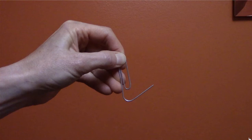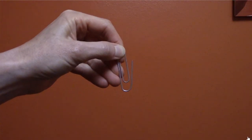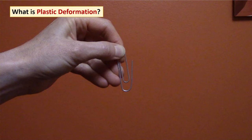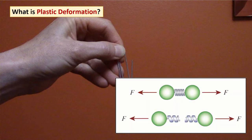What's going on in plastic deformation? What happens is the force pulling on the atomic bonds is large enough to break the bonds, and new bonds are formed, creating a new permanent resting position.